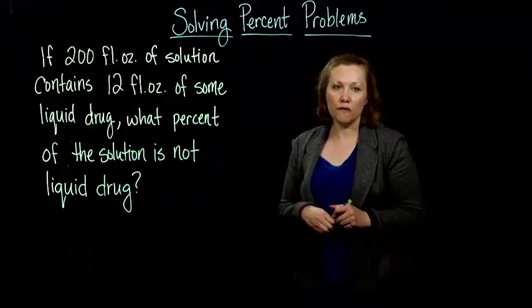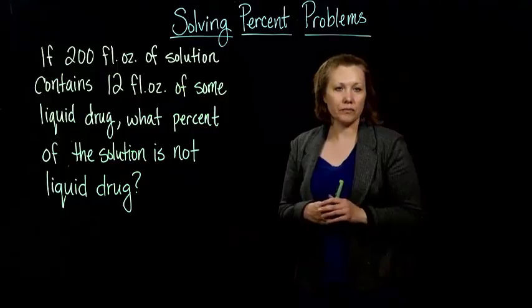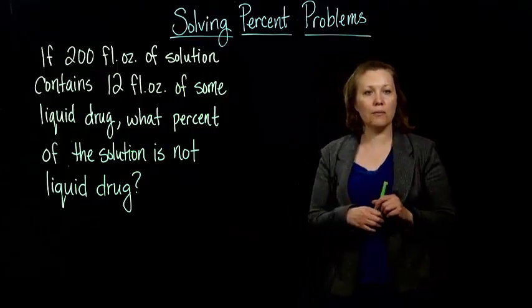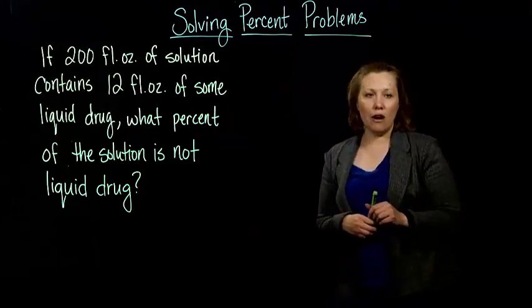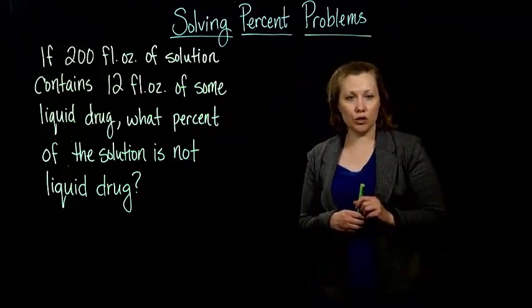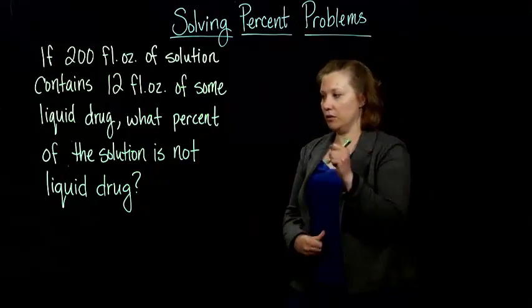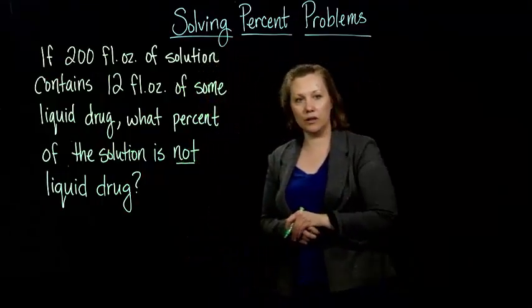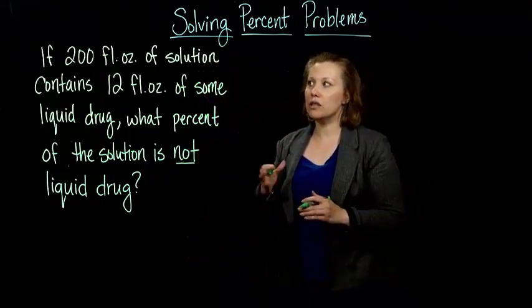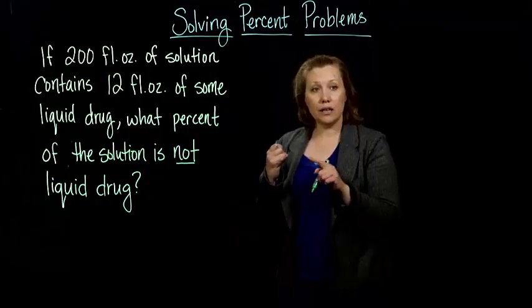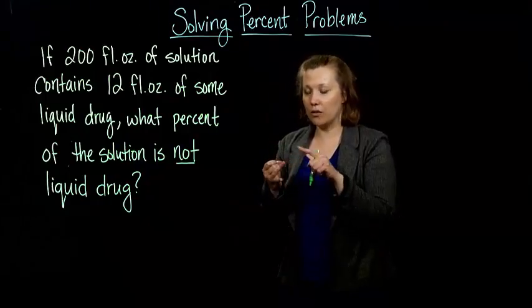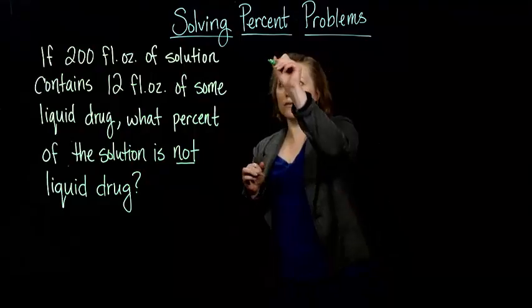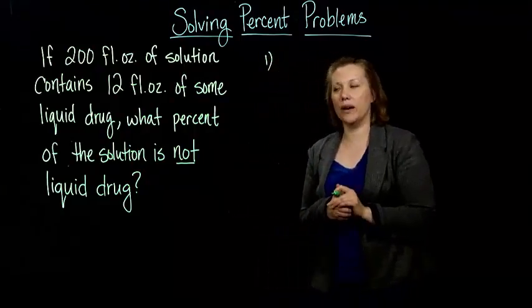So I've got 200 fluid ounces of solution that contains 12 fluid ounces of some liquid drug, and we want to figure out what percent of the solution is not liquid drug. So we can do this a couple of ways. We can either set up a proportion or an equation. So let's start first by using equations.